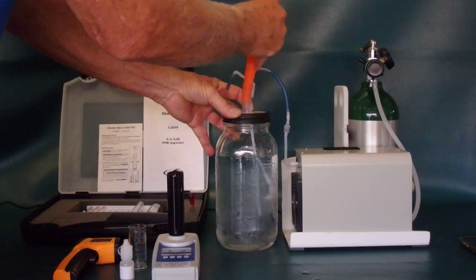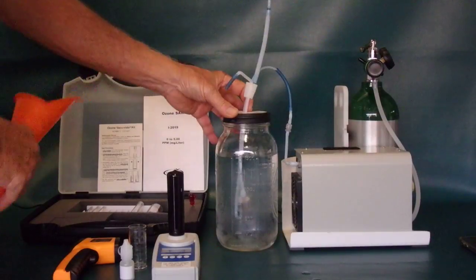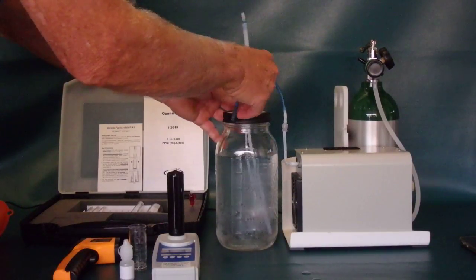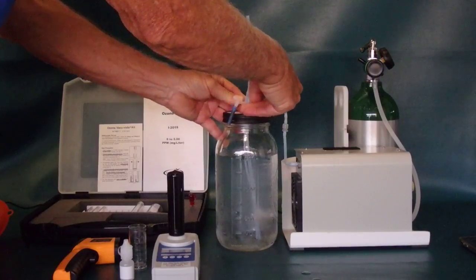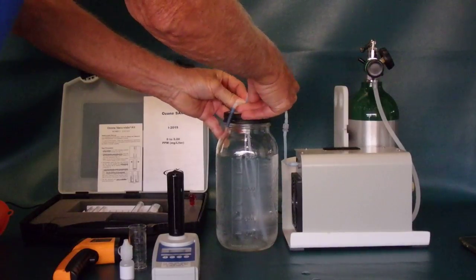Now this is chilled water and chilled water is very important to get maximum concentrations. At room temperature, that is 70 degrees, you really can't exceed 3 parts per million ozone. That's just the maximum due to the temperature effect of dissolving ozone in the system.